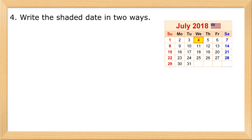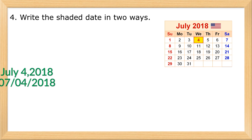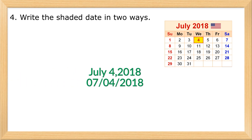4. Write the shaded date in two ways. July 4th, 2018. Written as: 0704, 2018.